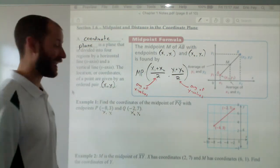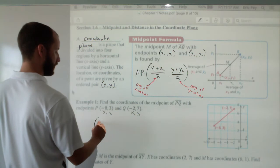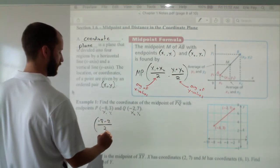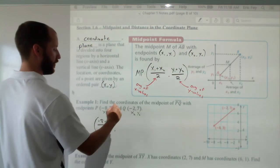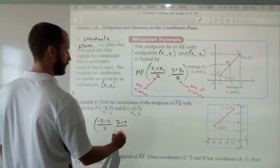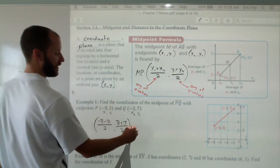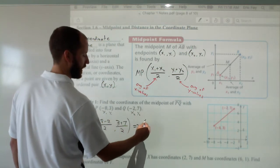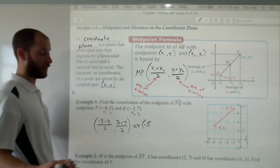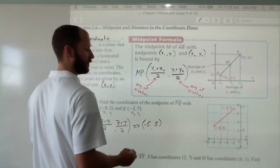Let's go ahead and find the averages. So add up your x's, negative 8, negative 2, divide by 2. Find the average of the y's, add up your y values, divide by 2. Negative 8 and negative 2 is negative 10. Negative 10 over 2 is negative 5. 3 plus 7, positive 10. 10 over 2 is positive 5.